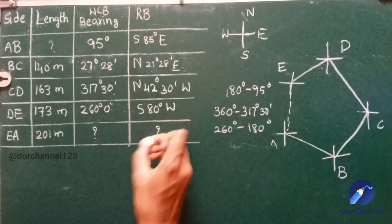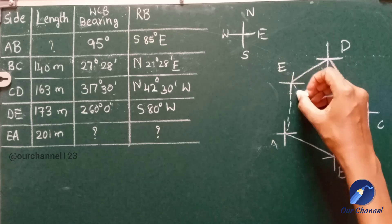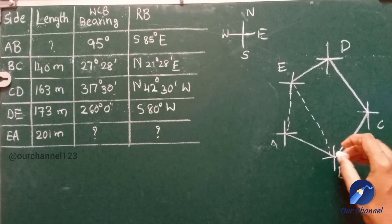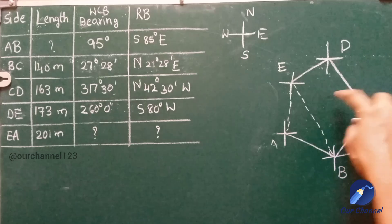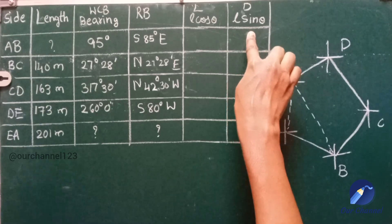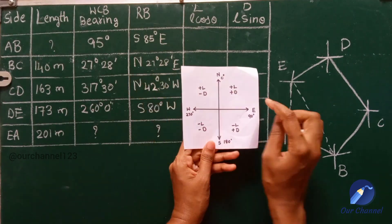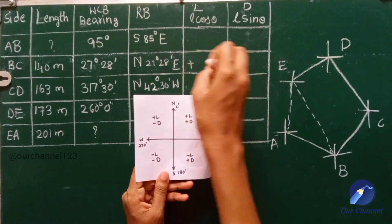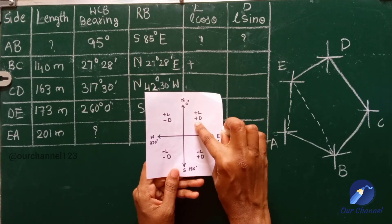The bearing of EA is not given. To find the length of AB and bearing of EA, we join E and B. We compute the length of EB and bearing of EB. Since BCDE is a closed traverse, we find it by calculating the latitude (L cos θ) and departure (L sin θ). In the North East quadrant, latitude is positive. For line BC, length is given; latitude and departure are both positive in North East.